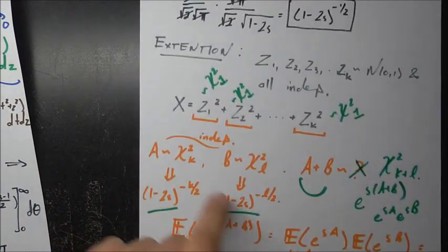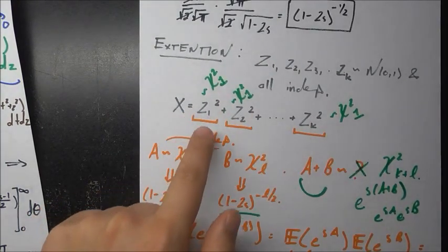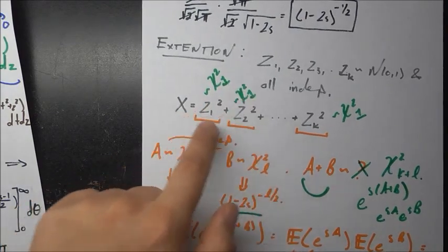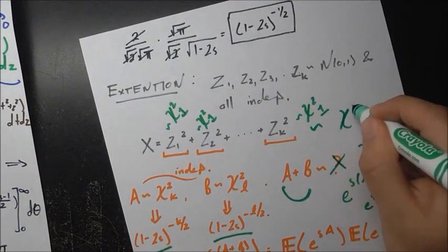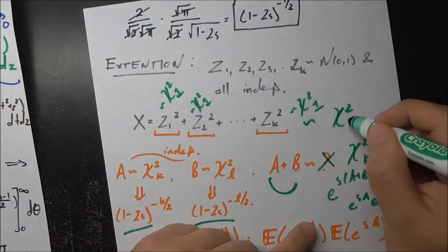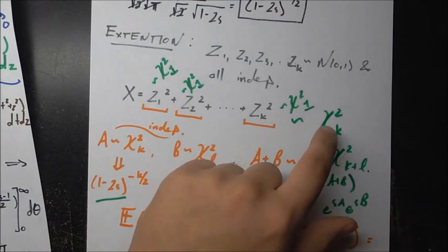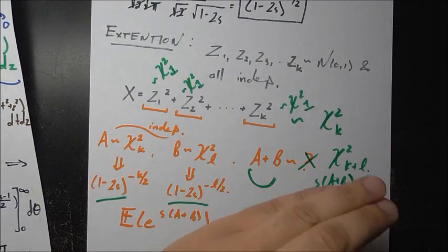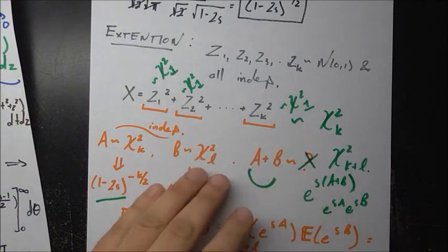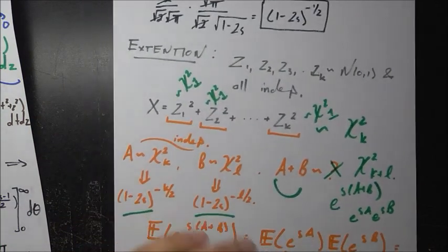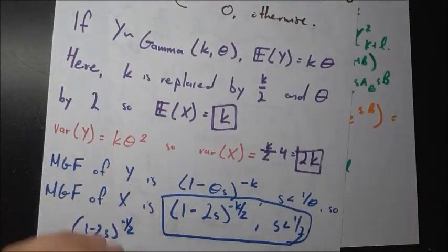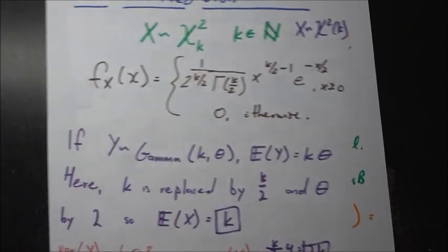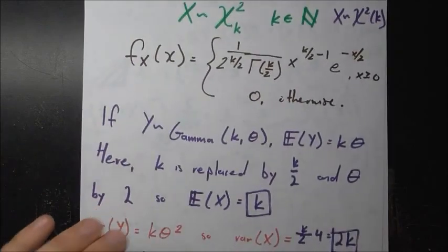Applying this result to our sum, each zᵢ² is χ²(1), so adding k of them gives χ²(1+1+...+1) = χ²(k). Therefore, a chi-squared random variable with k degrees of freedom is defined as the sum of k independent squared standard normal random variables. The key properties — expected value k, variance 2k, and MGF (1-2s)^(-k/2) — all follow easily from the gamma distribution foundation.